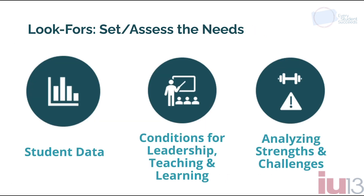There are three sections within the Set or Assess the Needs portion of the cycle of improvement: student data, conditions for leadership, teaching and learning, and analyzing strengths and challenges. For each section, I'll share factors for both compliance and quality, and I'll show you where the work is documented in the FRCPP.